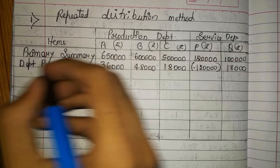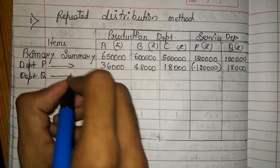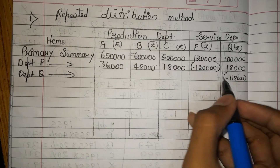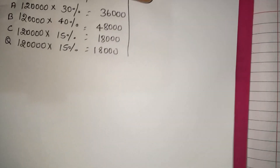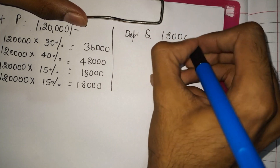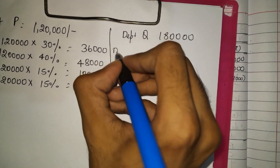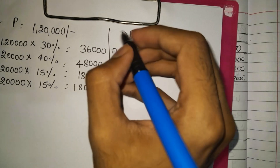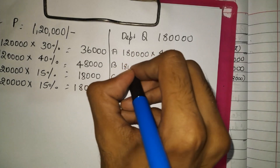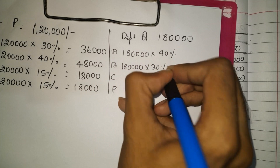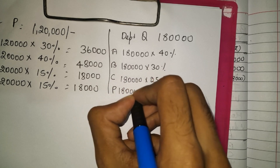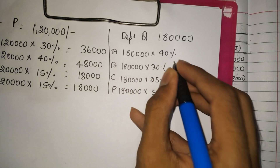Now we need to distribute department Q's cost between the other departments. Q now has 1,00,000 plus 18,000, so we minus 1,18,000 and distribute it among A, B, C, and P departments. So for department Q: 1,18,000 into 40% for A, 1,18,000 into 30% for B, 1,18,000 into 25% for C, and 1,18,000 into 5% for P department.